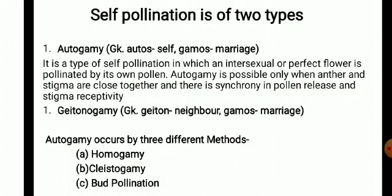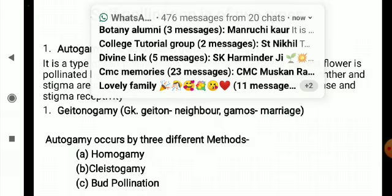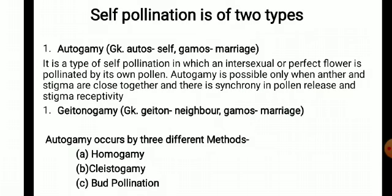Self-pollination is of two types: autogamy and geitonogamy. Autogamy is a type of self-pollination in which a bisexual perfect flower is pollinated by its own pollen. Autogamy is possible only when the anther and stigma are close together and there is synchronicity in pollen release and stigma receptivity — meaning both the male and female parts are close to each other and mature at the same time.